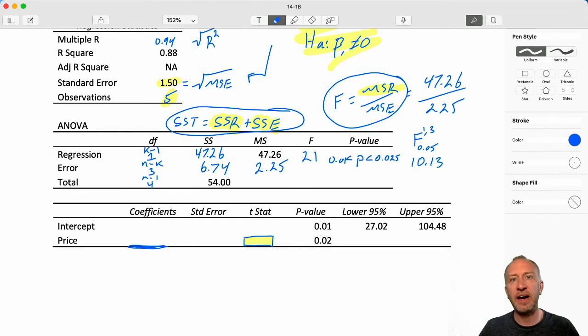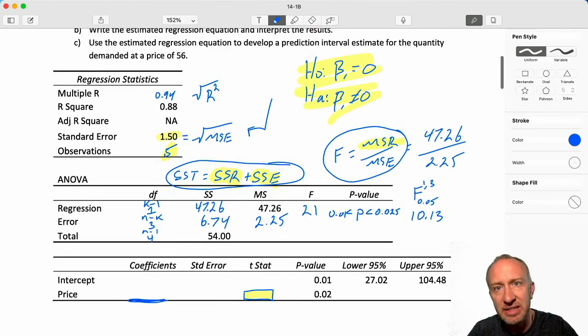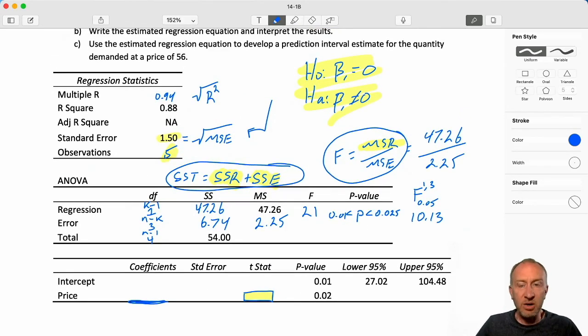Good. So we have our ANOVA complete. We have our regression statistics are complete. Now we can move into our third table, which is for the estimated regression equation. Now I'm going to keep these videos separate, just like I did on the first one. So although this was a little bit faster, I'll start a fresh video for that third table, for estimating that regression equation.